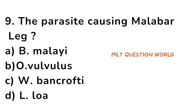Question number 9. Which parasite causes Malabar leg? Option A. Brugia malayi, option B. Onchocerca volvulus, option C. Wuchereria bancrofti, option D. Loa-Loa. The right answer is option C, Wuchereria bancrofti. Malabar leg is caused by Wuchereria bancrofti.